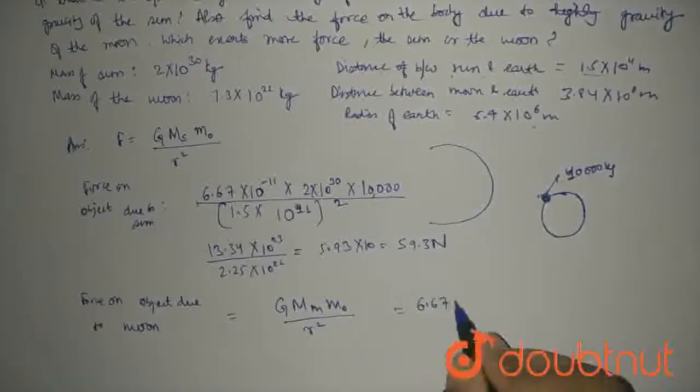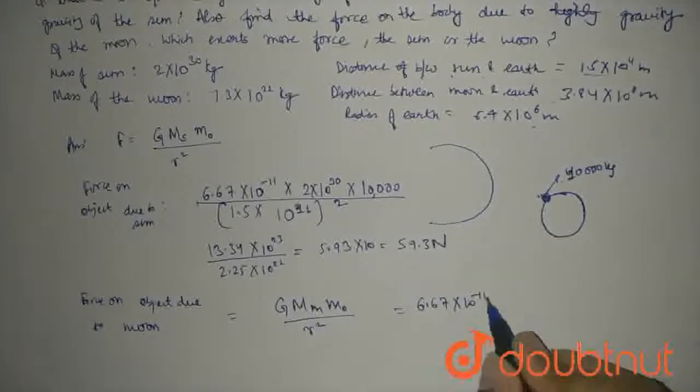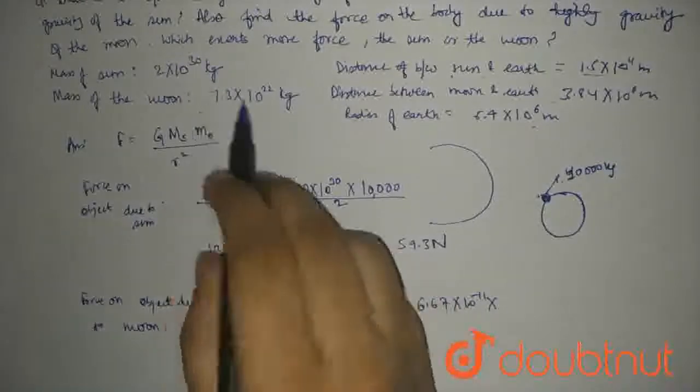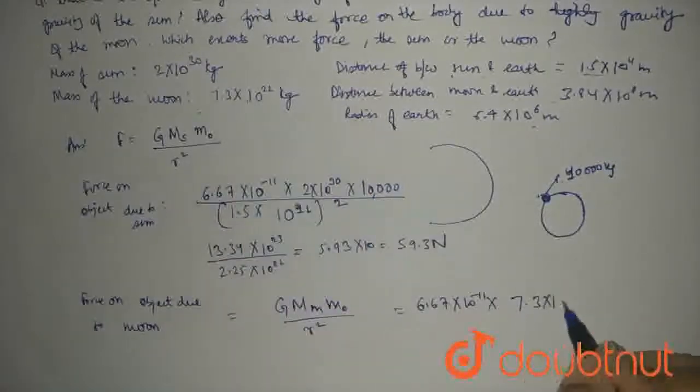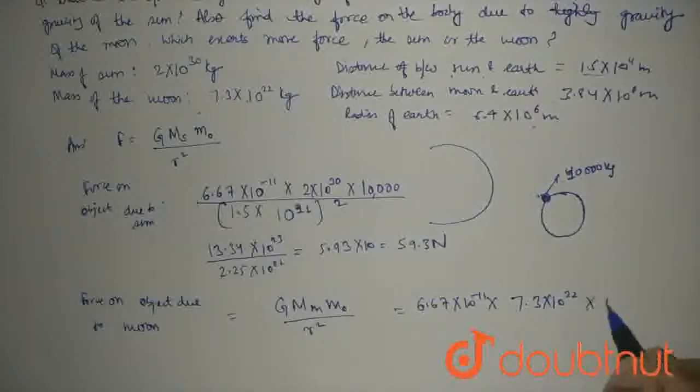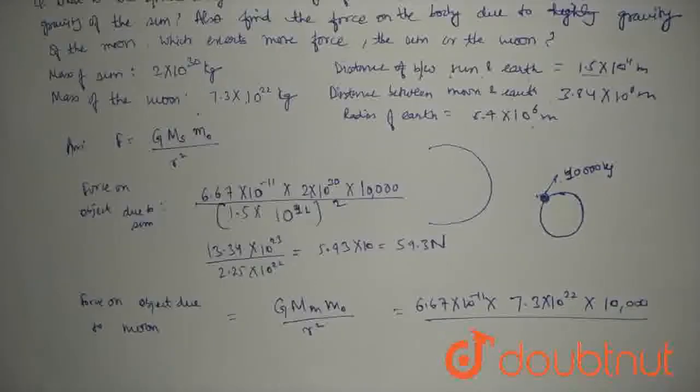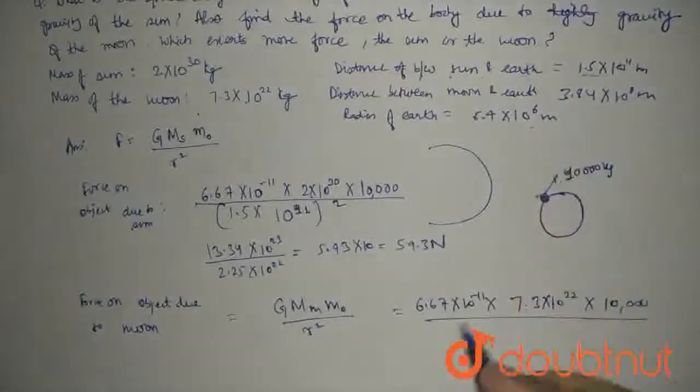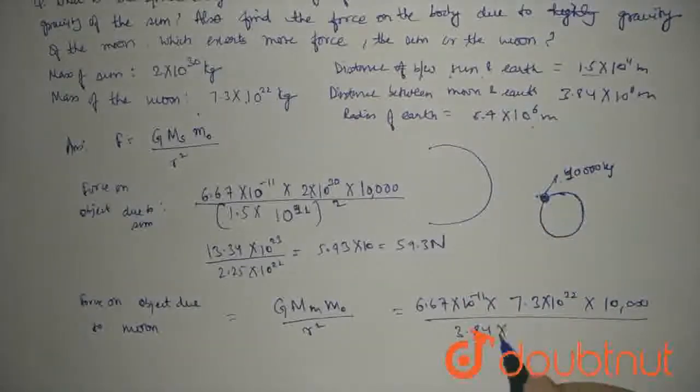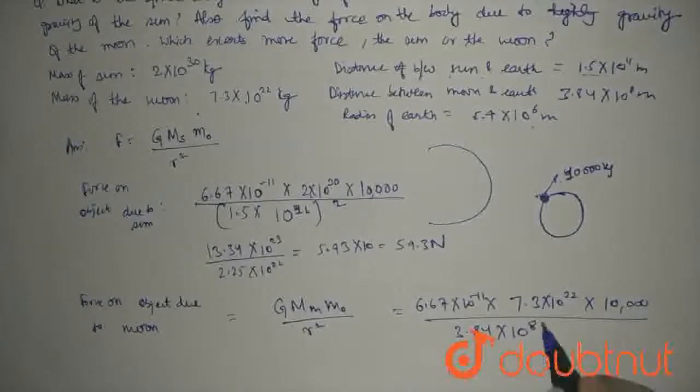G is 6.67 times 10 to the power minus 11. Mass of moon is 7.3 times 10 to the power 22. Object is 10,000 kg. Distance between moon and earth is 3.84 times 10 to the power 8 meters, whole squared.